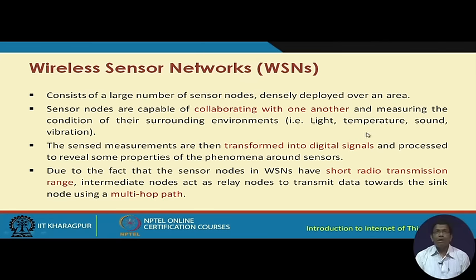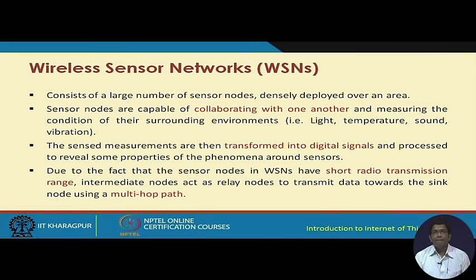The sensor nodes are capable of collaborating with one another and measuring the condition of physical phenomena around them — lighting, temperature, sound, vibration, etc. The sensed measurements are transformed into digital signals and processed to reveal properties of the phenomena. Due to short transmission range in WSNs, intermediate nodes act as relays and transmit data in a multi-hop manner until it reaches the sink node.